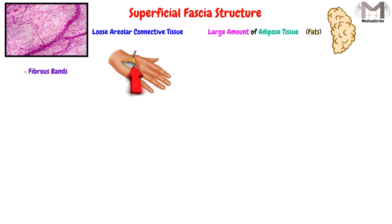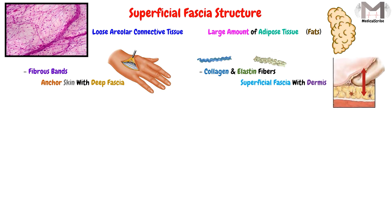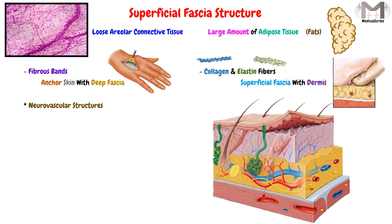First, there are fibrous bands that anchor the skin to the deep fascia. Also, we can find collagen and elastin fibers; these fibers connect the superficial fascia with the dermis layer strongly.